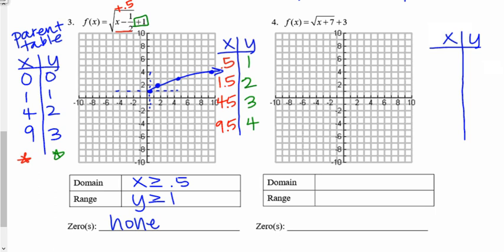Finally, number 4. I have x plus 7, meaning I subtract 7 from all of my x values: 0 − 7 = −7, 1 − 7 = −6, 4 − 7 = −3, 9 − 7 = 2. For y's, I have plus 3 at the end, so I add 3: 0 + 3 = 3, 1 + 3 = 4, 2 + 3 = 5, 3 + 3 = 6. Graphing the new points: (−7, 3), (−6, 4), (−3, 5), and (2, 6).